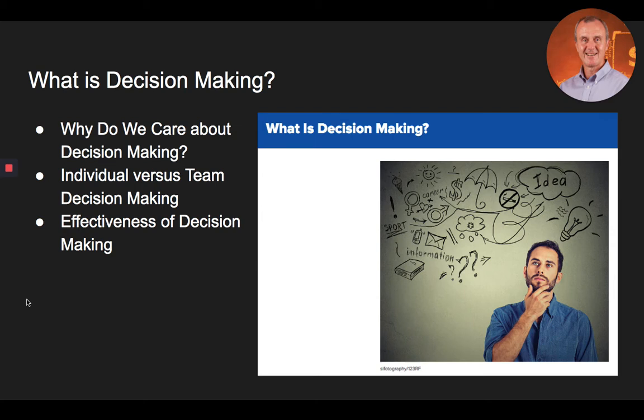First, let's talk about what is decision making. Decision making is widely considered to reflect a process of making a choice or selecting a course of action among alternatives that may be concrete or assumed to address a problem. The word problem in this definition should be interpreted broadly as meaning any inquiry for which an answer is desired.